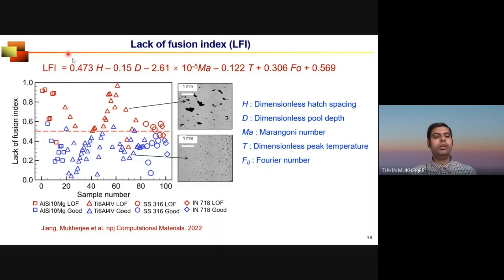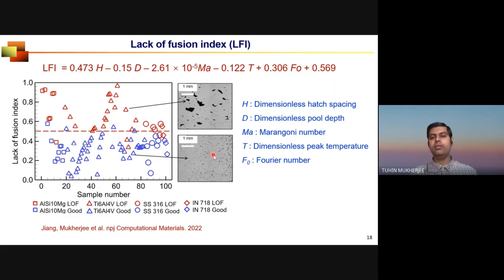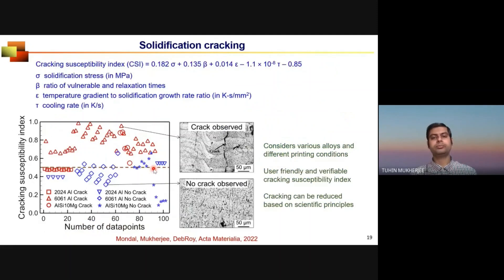Combining all important variables — hatch spacing, pool depth, Marangoni number, temperature, and Péclet number — machine learning produces a lack-of-fusion index varying between 0 and 1, with a threshold at 0.5. Above 0.5, defects occur; below 0.5, no defects. Engineers adjust process variables and alloy selection so that the lack-of-fusion index falls well below 0.5, avoiding the defect.